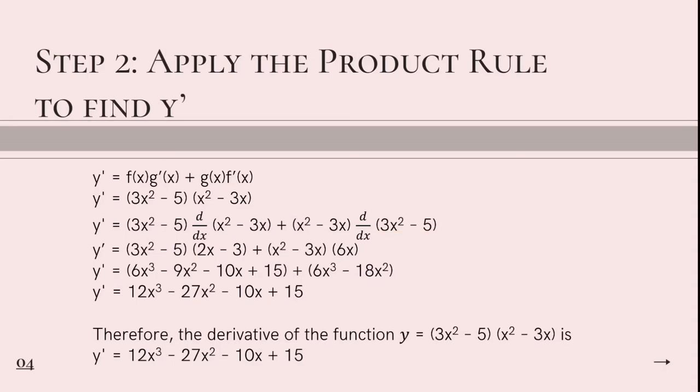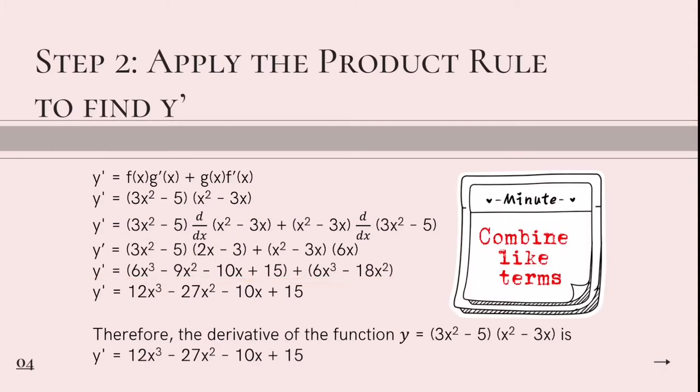So we're going to multiply the derivative and its given. So 3x squared minus 5 times 2x minus 3 plus x squared minus 3x times 6x. So we will get 6x cubed minus 9x squared minus 10x plus 15 plus 6x cubed minus 18x squared. So we're going to combine like terms.